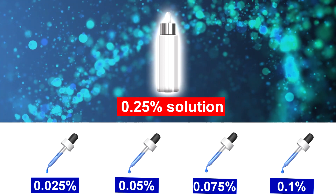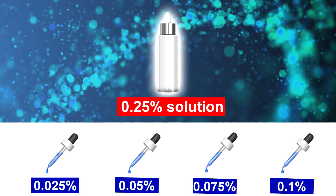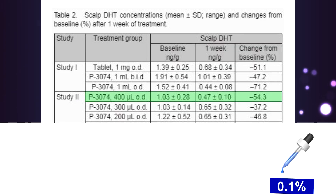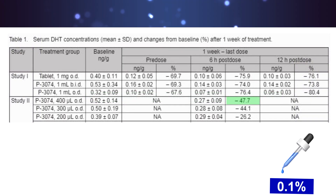Let's observe these four reduced concentrations of the original 0.25% solution and compare their scalp DHT suppression versus serum DHT suppression ability. The highest scalp DHT suppression of 54.3% was observed with the 0.1% solution, which came with a serum DHT suppression of 47.7%.